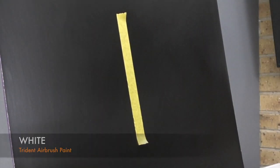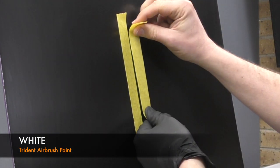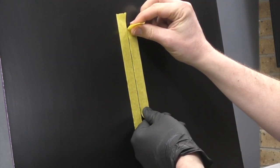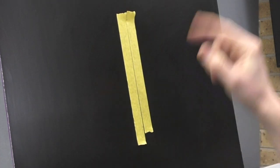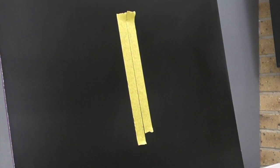The paint that I'm using is Trident Airbrush paint and I'm starting off with white. I'm just masking off, leaving like a millimeter gap, masking off a horizontal strip which will become the basis for the first part of the starburst.